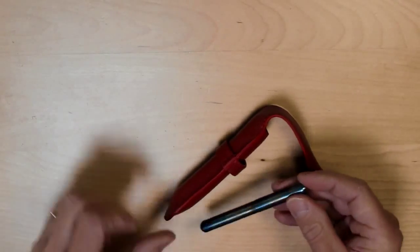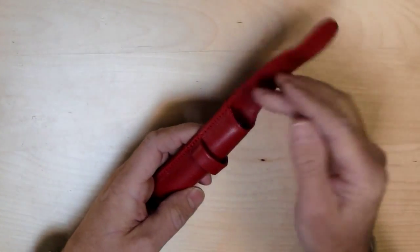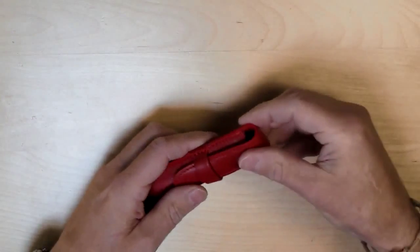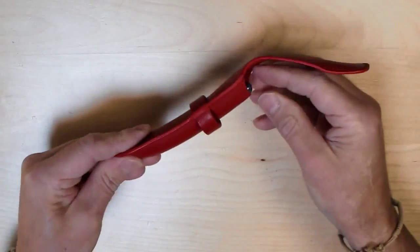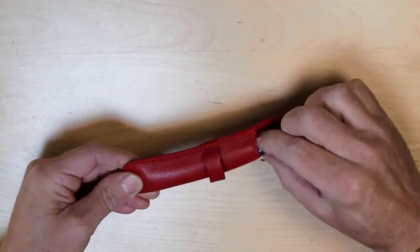Another pen from Kaweco, the Lilliput, even smaller this time, almost disappears in the pen case, but as you can see the combination still works well.